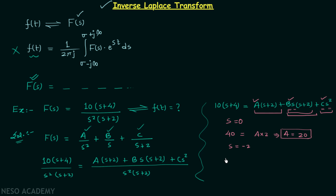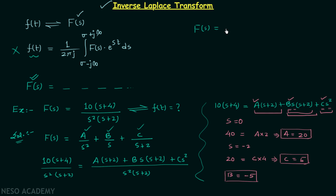Putting s = −2, we get 20 on the left hand side and C × 4 on the right hand side, giving us C = 5. Now we have two constants A and C. Taking any other value of s and substituting A and C into the equation gives us B = −5. So we have all three unknowns and can write F(s) = 20/s² − 5/s + 5/(s + 2).